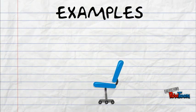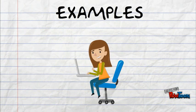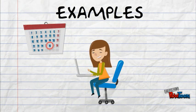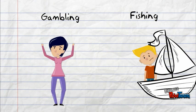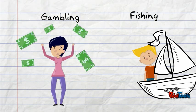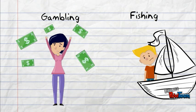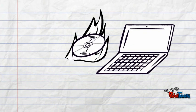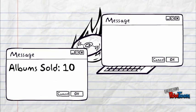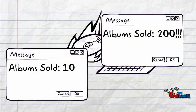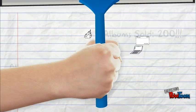Examples of schedules of reinforcement can be seen all around you. If you have a quiz given on a fixed interval schedule, it means you're guaranteed to have a quiz every seven days. Things like gambling and fishing are on variable ratio schedules, which is why these activities are so popular — you never know which hand of cards or which cast will bring you a reward. If you independently sell your mixtape online and get $50 one week but $1,000 from the next week's sales, that's an example of variable interval reinforcement.